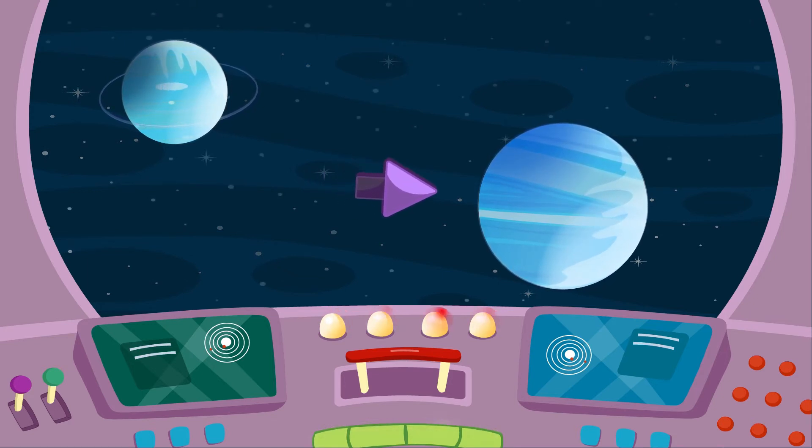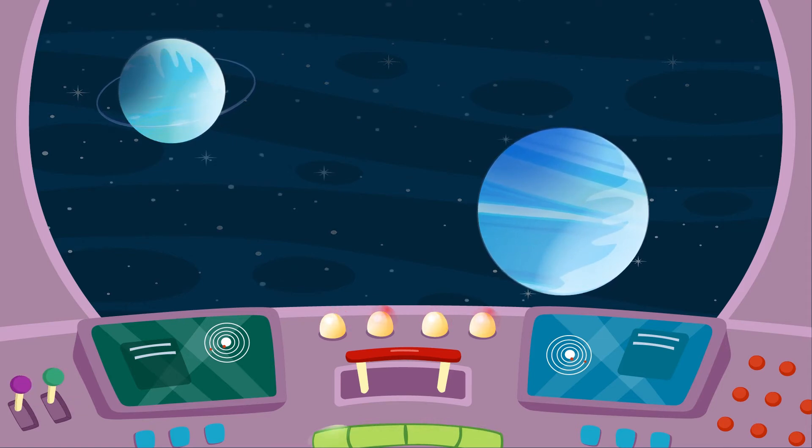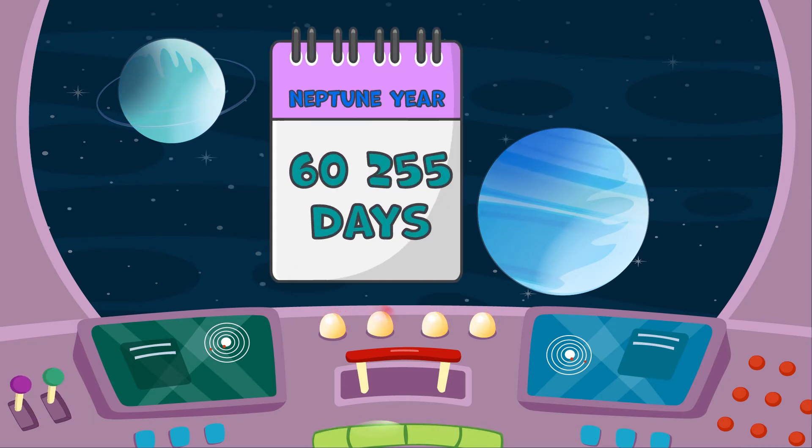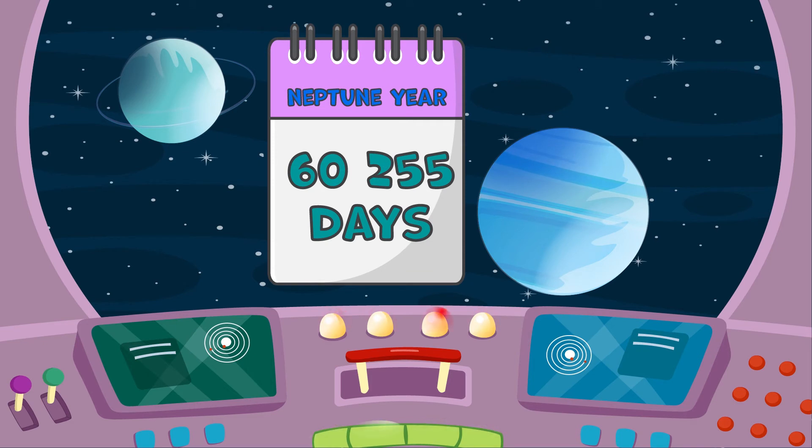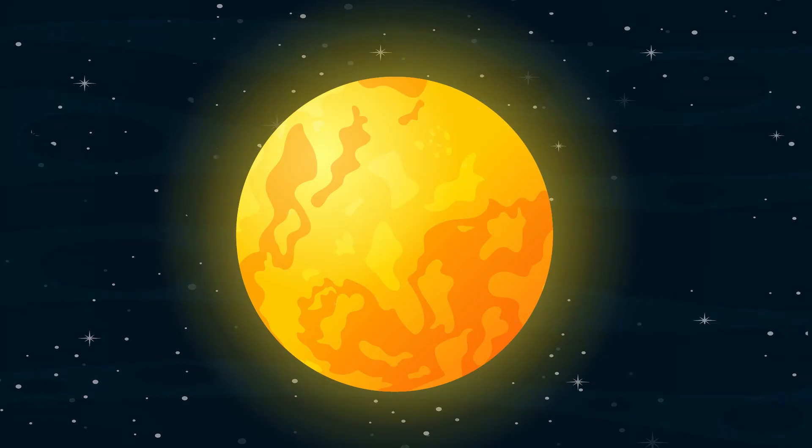Neptune is the eighth and most distant planet in our solar system. It is an ice giant planet and about four times wider than Earth. Neptune takes about 16 hours to rotate once and about 165 Earth years to orbit the Sun.